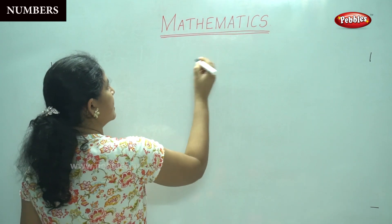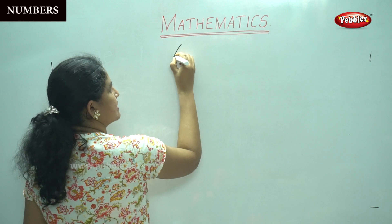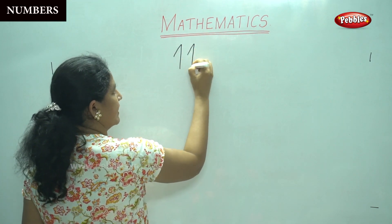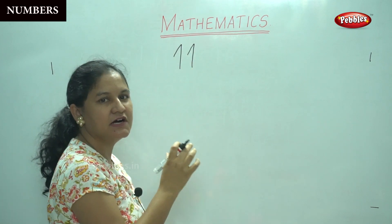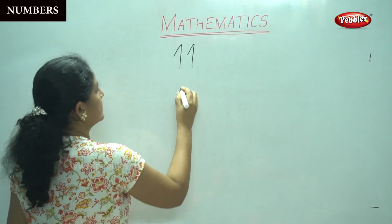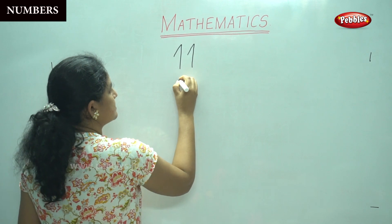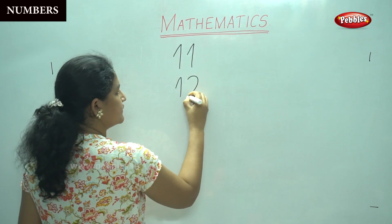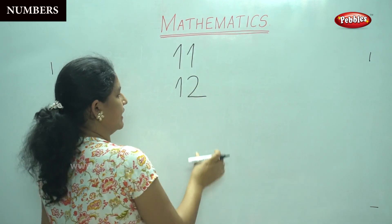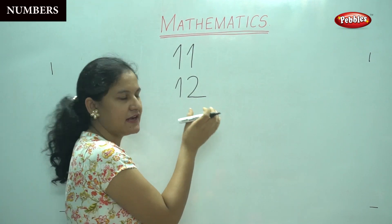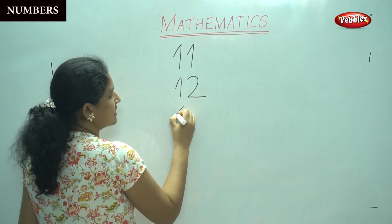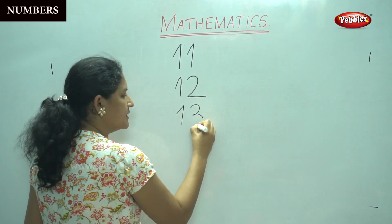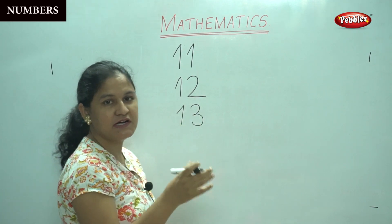Number 11: slanting line, straight line, slanting line, straight line. This is number 11. Next, slanting line, straight line, a curve and a sleeping line. This is number 12. Slanting line, straight line, a curve and a curve. This is number 13.